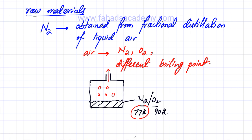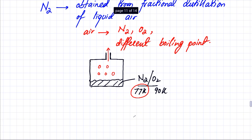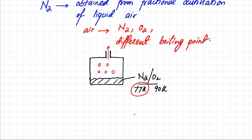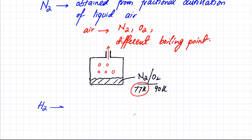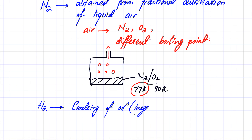The other raw material for the Haber process is hydrogen. We will discuss how hydrogen is obtained when we study organic chemistry, but the process is called cracking of oil — or cracking of large chain hydrocarbons, which are generally not very useful. Oil is basically a mixture of different hydrocarbons.